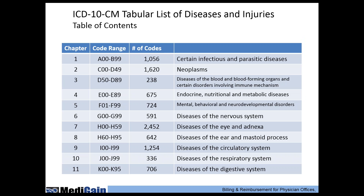The ICD-10-CM codebook table of contents is organized in an anatomic or organ system-based layout. Based on the number of codes, different areas are impacted differently. Rather than trying to learn all the different categories, you want to focus on the key areas that pertain to your practice and specialty, and which ones have the most changes that you need to be aware of.